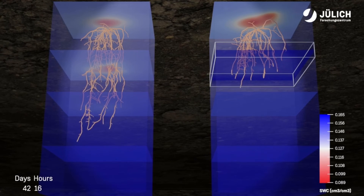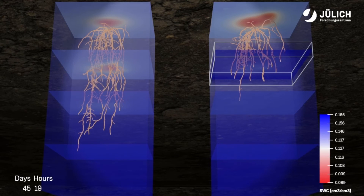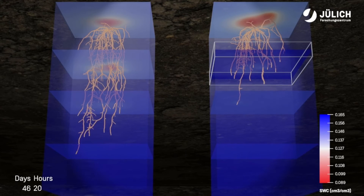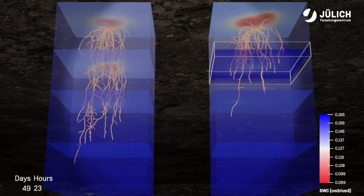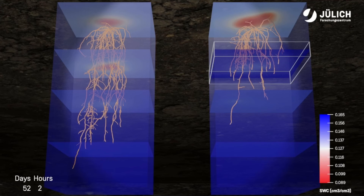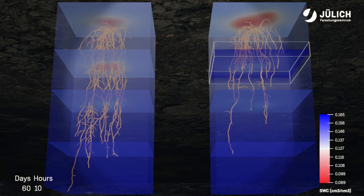As the seminal roots grow through the compacted layer, the rate of downward growth starts to increase again, but the impact on the root system is clear. It has fewer roots in the deeper layers and will have less access to subsoil water and nutrients later in the growing season.